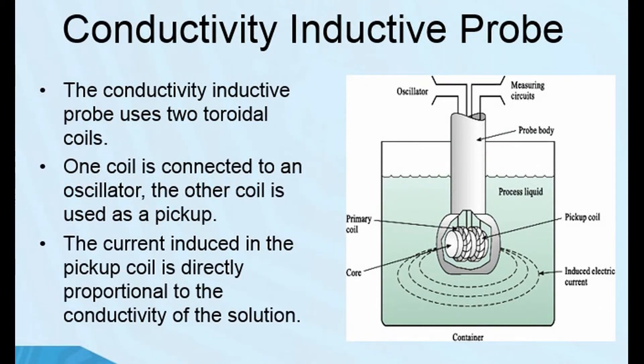With an inductive probe, you're using transformer action, if you look very carefully at the coils. And then the liquid in which you insert the probe may increase or decrease the magnetic field. And if that's the case, then that means you can get an idea of what the pH is by the way the magnetic field is changing.